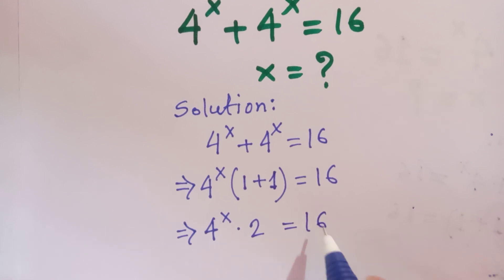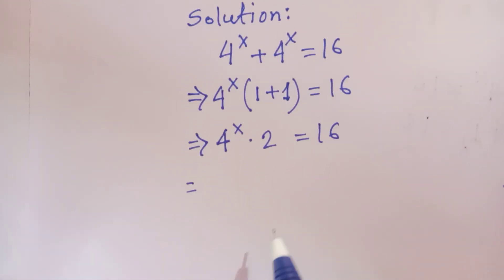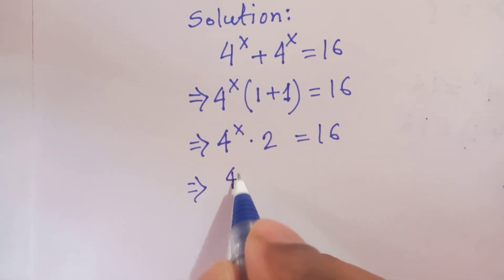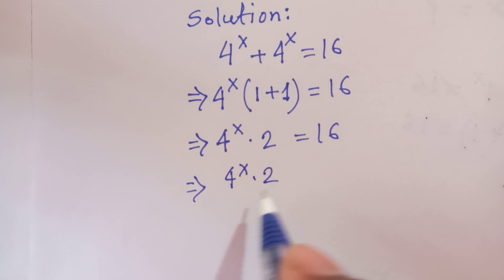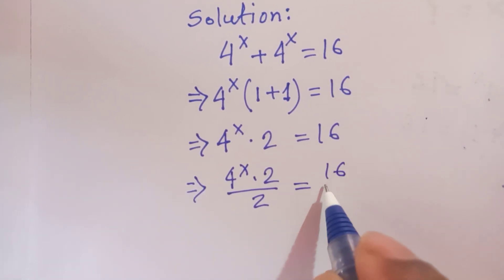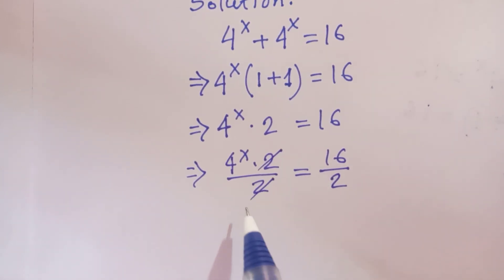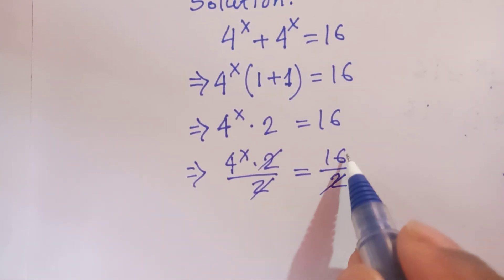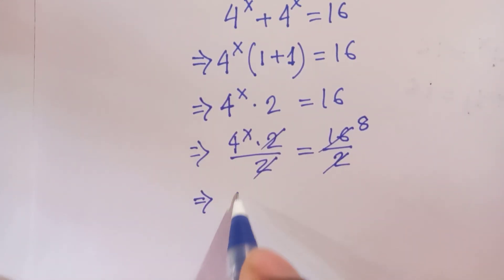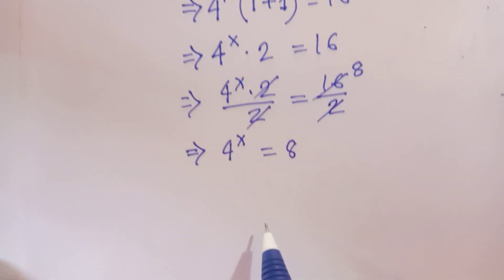This equals 16. Now we divide both sides by 2: 4 to the 4x times 2 divided by 2 is equal to 16 divided by 2. The 2's cancel out, giving 16 divided by 2 is 8, so 4 to the 4x is equal to 8.